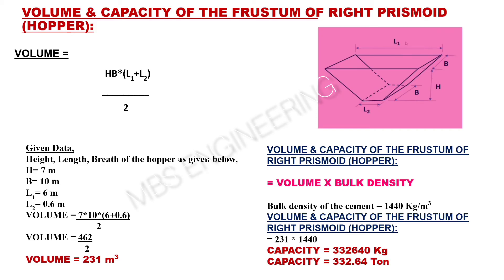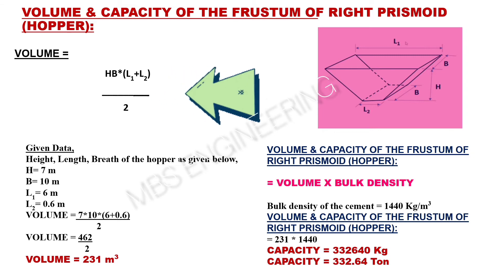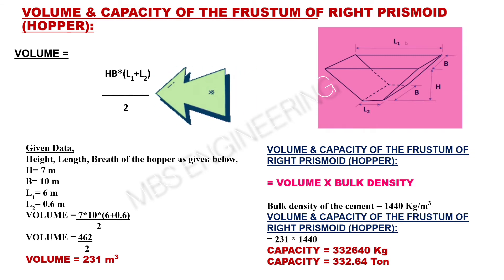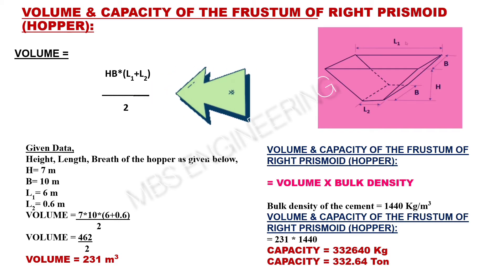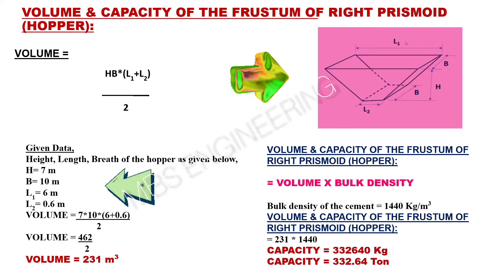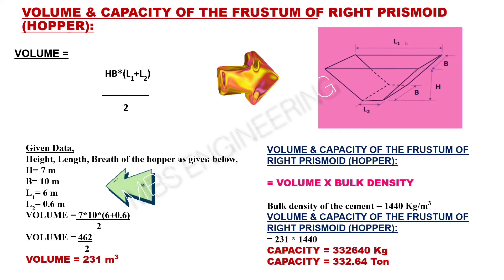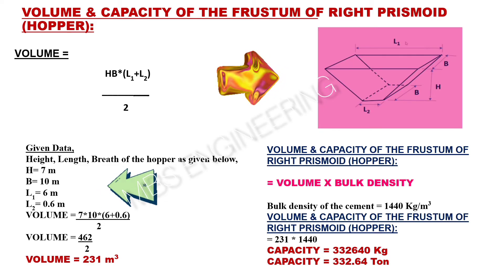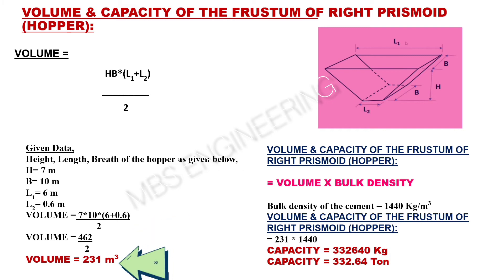Next, we learn about how to calculate the volume and capacity of the frustum of right prismoid hopper. The volume calculation formula is: H × B × (L1 + L2) divided by 2. Please refer to the frustum of right prismoid or hopper snaps and given data. H is 7 meters, B is 10 meters, L1 is 6 meters, L2 is 0.6 meters. Based on the above equation and given data, the volume of the frustum of right prismoid or hopper is 231 cubic meters.